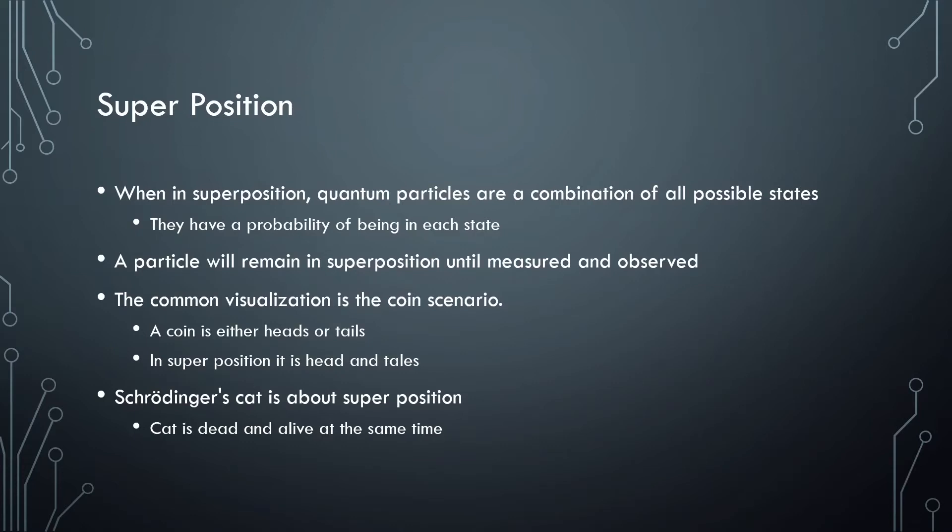So first up is superposition. When in superposition, quantum particles are a combination of all their possible states at once. This means there is a probability that the particle is in each possible state. A particle will remain in superposition until it is measured.